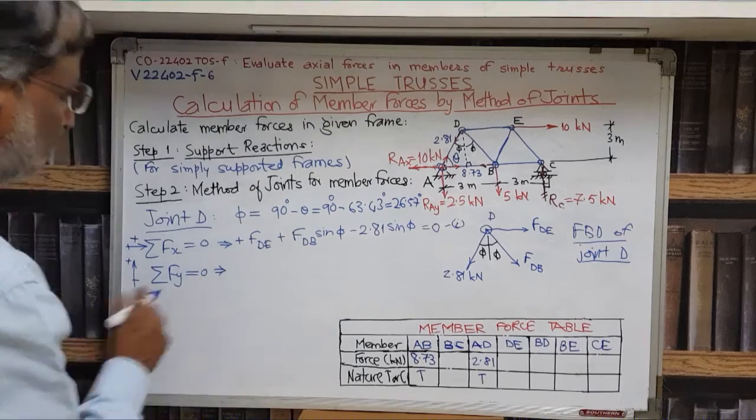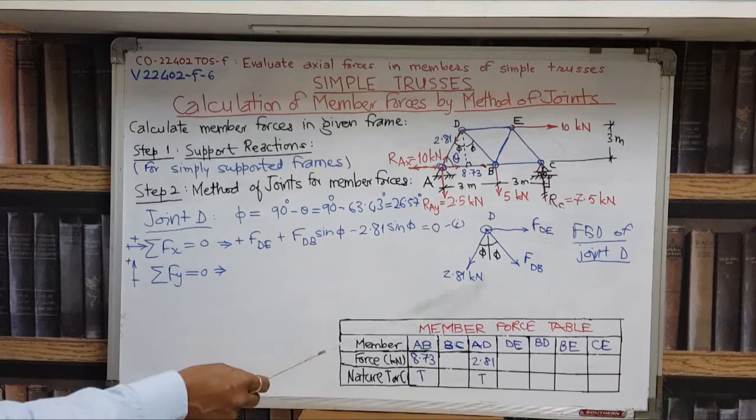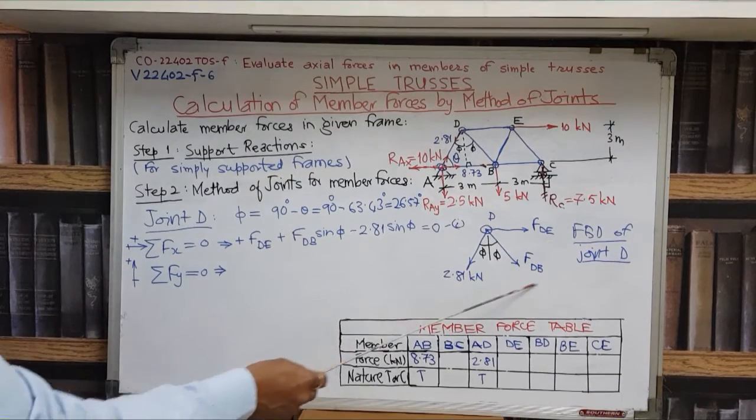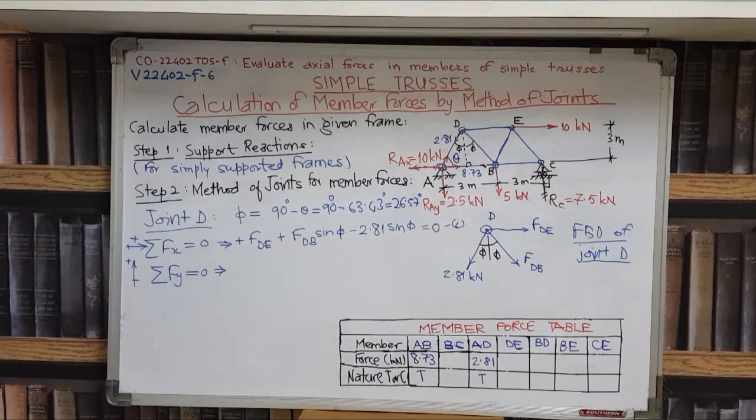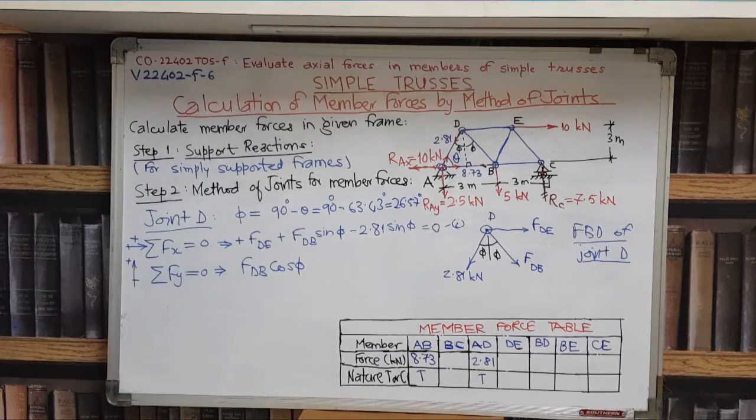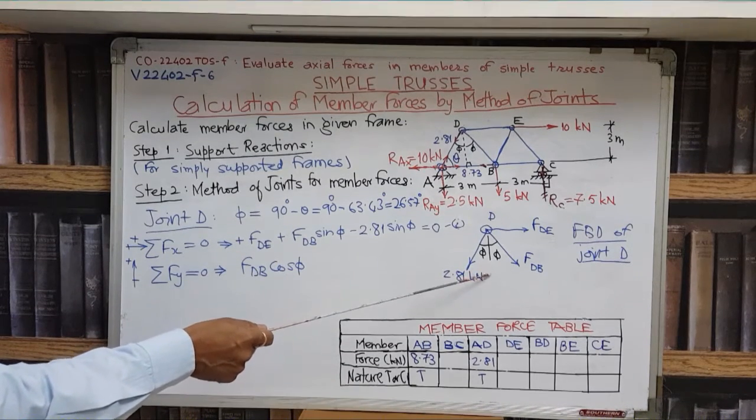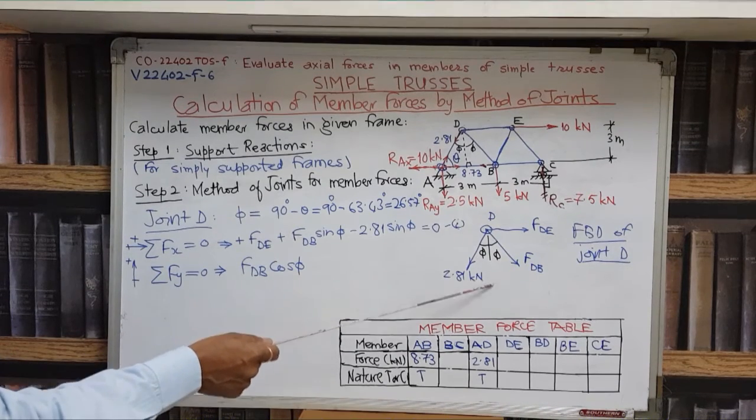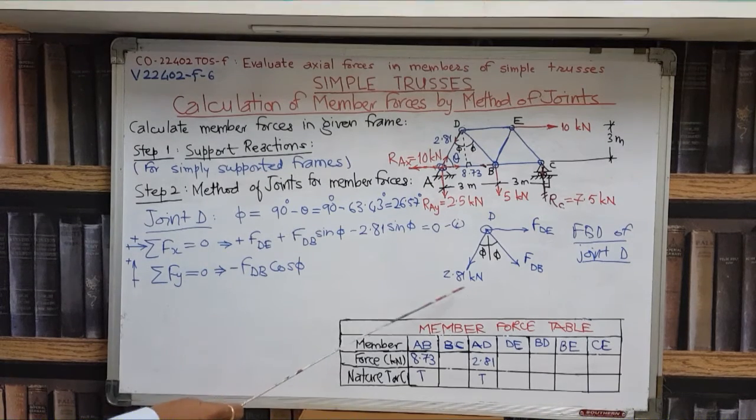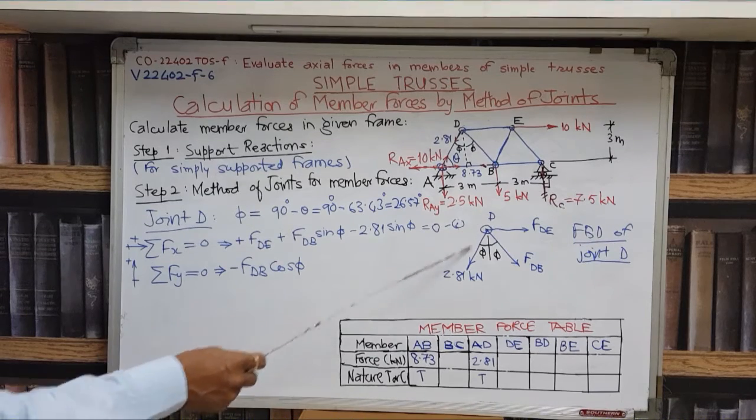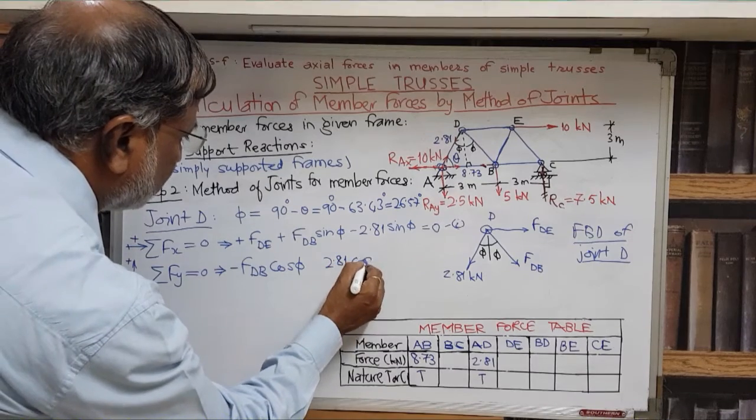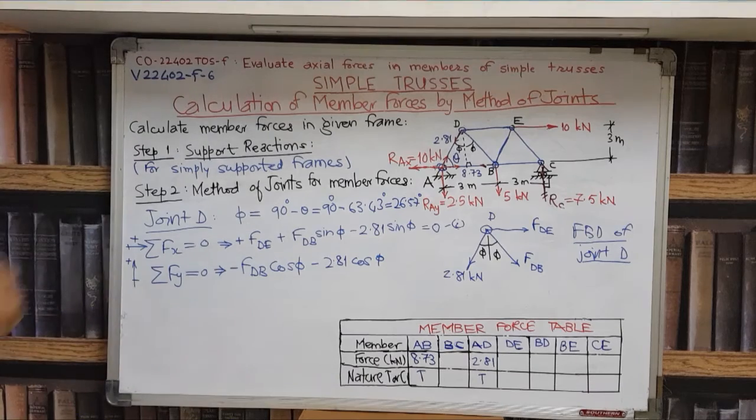Now let us apply the condition. Look at all the three forces and consider their y component. FDE, its y component is zero. It is already horizontal in x direction. Then FDB is inclined so it will have a y component. Y component will be FDB into cos phi. That y component will be directed downwards, so it will be minus.